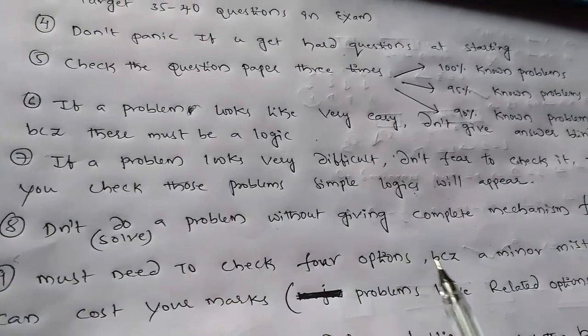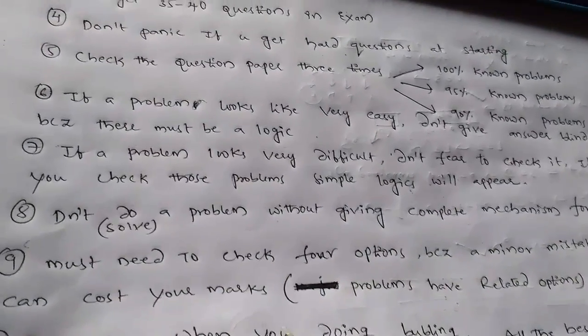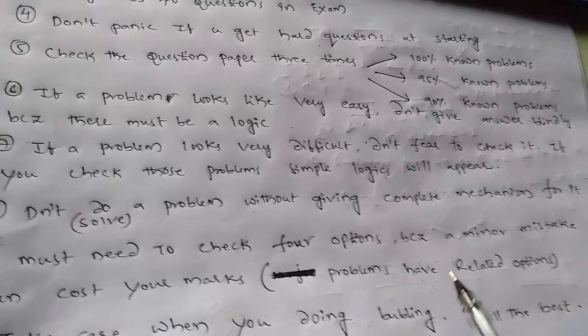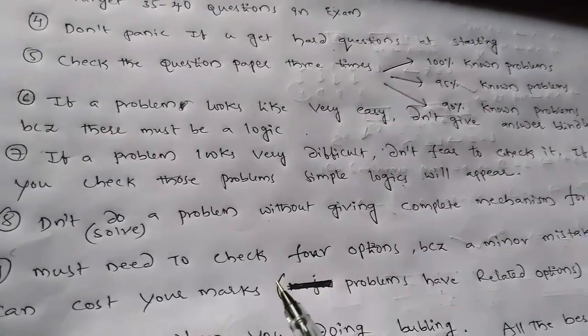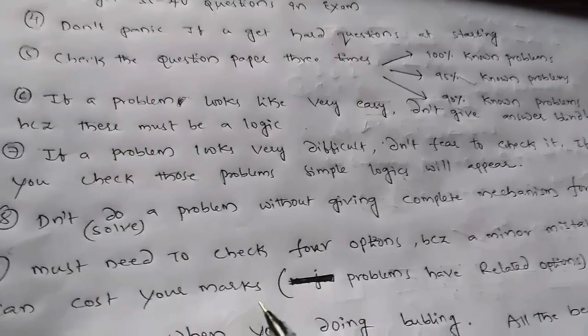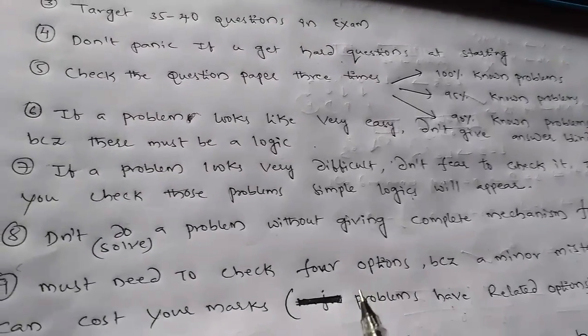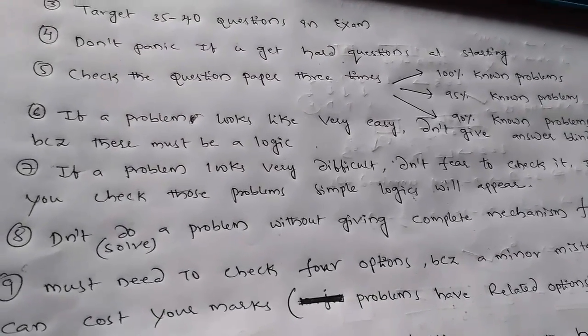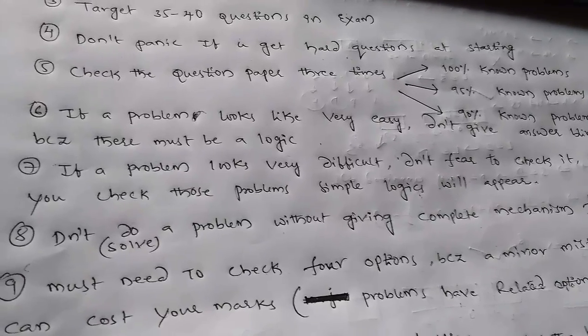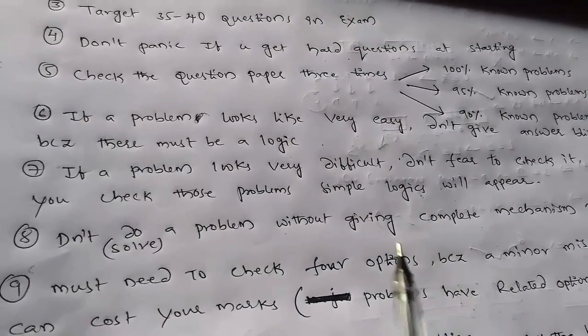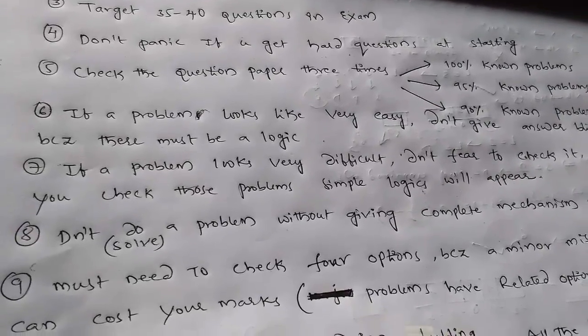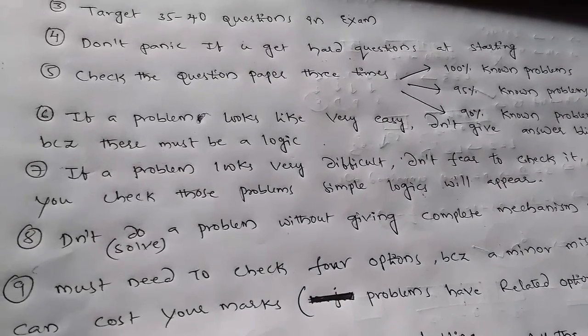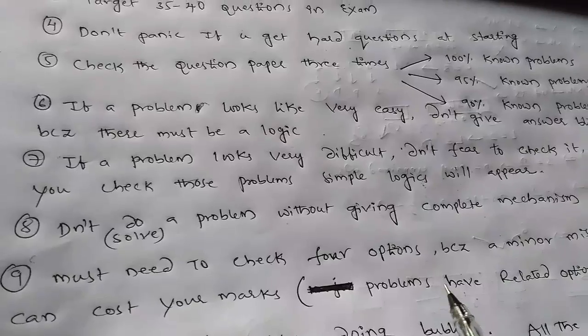Ninth one is you must need to check four options because minor mistakes can cost you marks. Many problems have related options. You need to check the four options. If you know the correct answer, please check the four options. Is there any other related options in the given problem? Because the one which is correct, which may be correct for you, but there is a logic, there may be a logic and that may not be your answer.